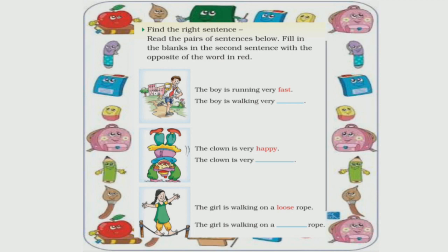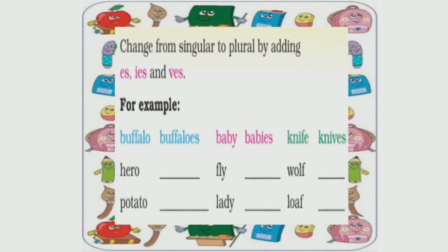And the last exercise is: change from singular to plural by adding -es, -ies, or -ves. If a word ends in 'o', add -es. If it ends in 'y', remove the 'y' and add -ies. If it ends in 'f' or 'fe', remove the 'f' and add -ves. In this way you will get the plural form of the singular words.